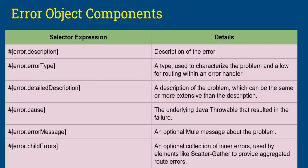The error type field is used to characterize the problem and allow routing within the error handler — based on the error type, it goes to the particular error handler flow and executes the code there. For more detail, you can use 'error.detailedDescription.' The 'cause' field shows a Java thread, which is harder to understand but useful if you need to catch a specific Java throwable. The 'error message' is optional and shows additional details for specific errors like periodic connectivity issues.